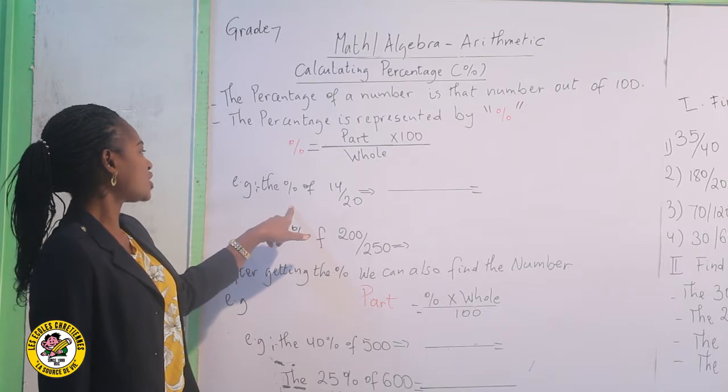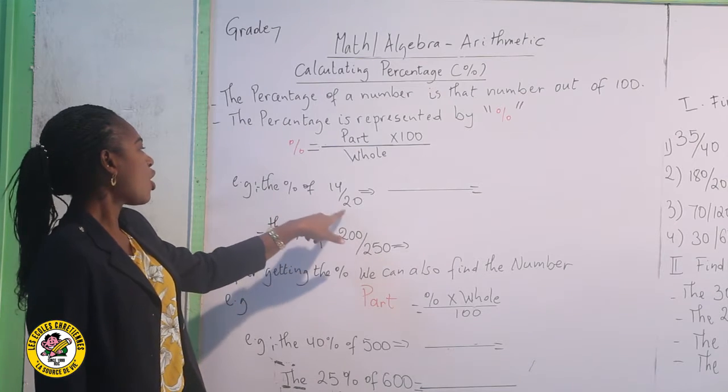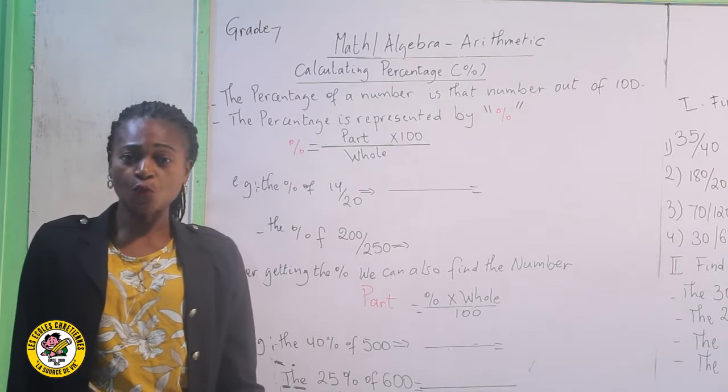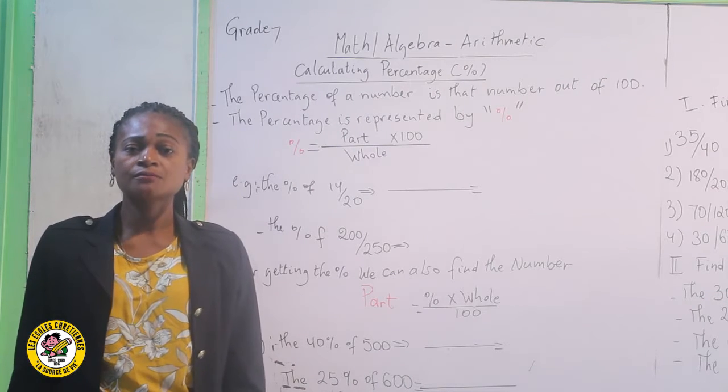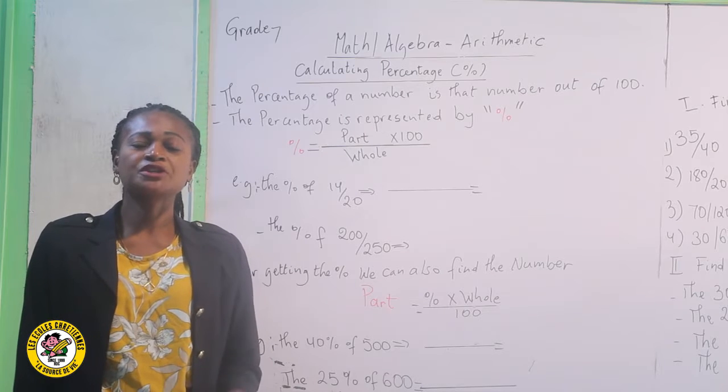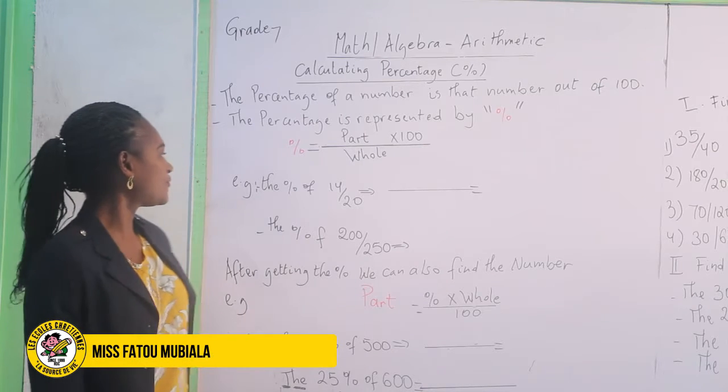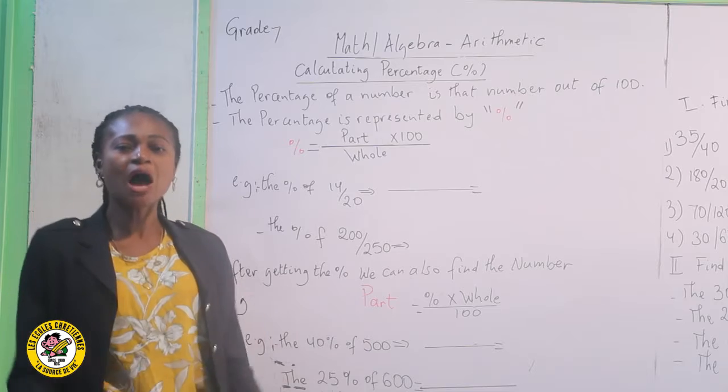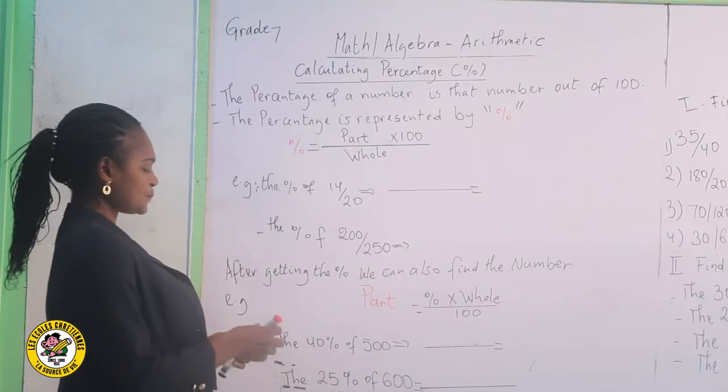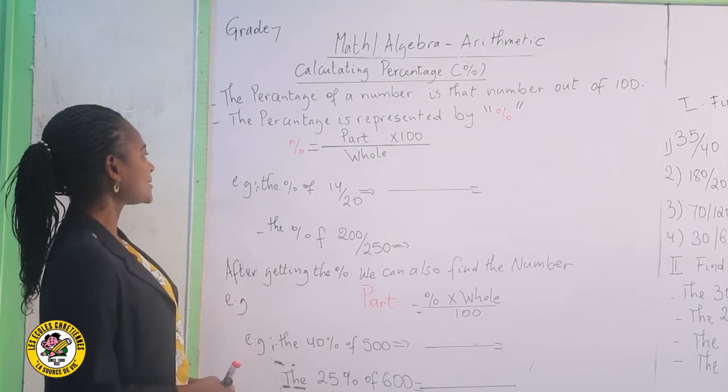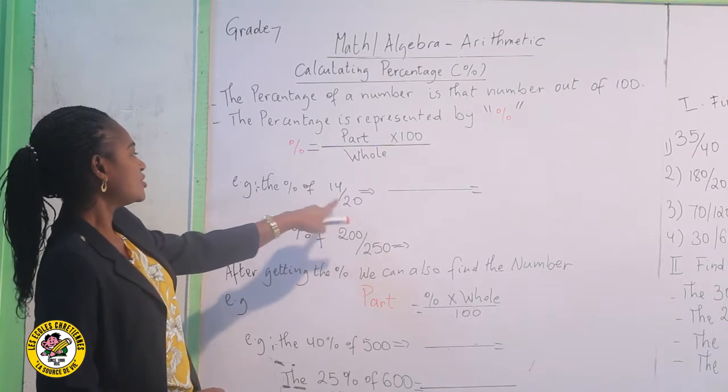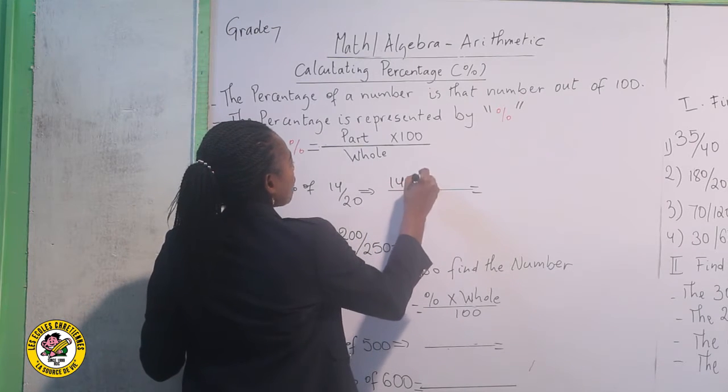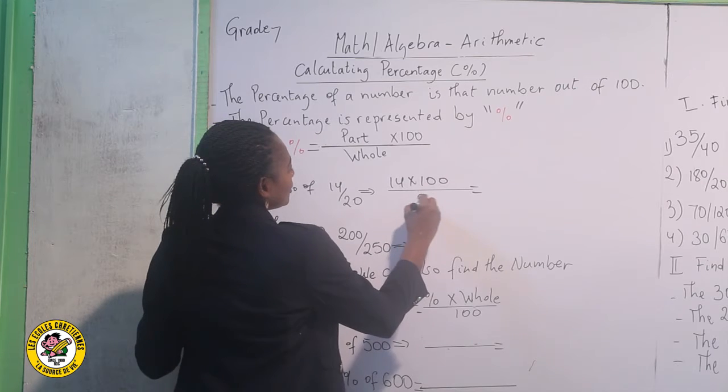Example. They want to know the percentage of 14 out of 20. Somebody gets 14 out of 20 during the assignment and during the exam. We need to know the percentage. So this means that if out of 20 it was 14, how much will be this number out of 100. For that we need to solve. What is the part? The part is 14. The whole is 20.